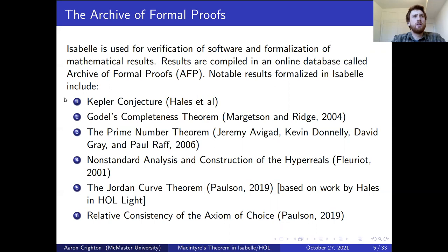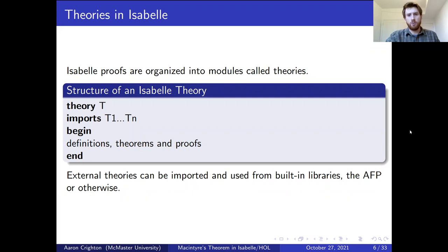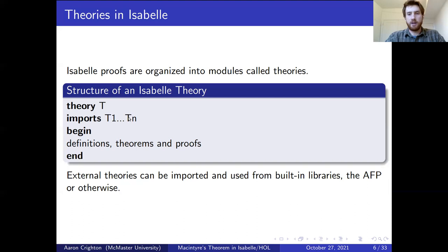I'll give a brief technical overview of what it means to formalize something in Isabelle. Every proof in Isabelle is organized into a module called a theory — a document that has a name, may import other theories, and whose body consists of definitions, theorems, and proofs. The import feature is important because, if you have a well-composed Isabelle proof of a fact from somewhere like the Archive of Formal Proofs, you can import it and use it in your own proofs.